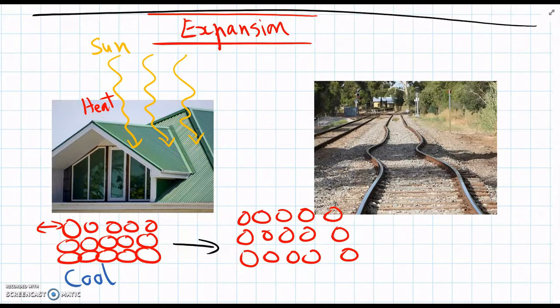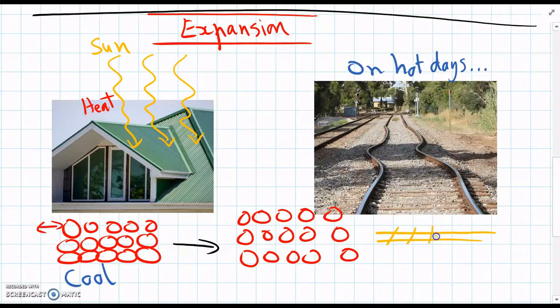And another example that's really a problem in Melbourne in summer is railway lines. They can also expand when they get too hot. So on really hot days, like above 40 degrees, the metal in the railway lines expands because of heat.